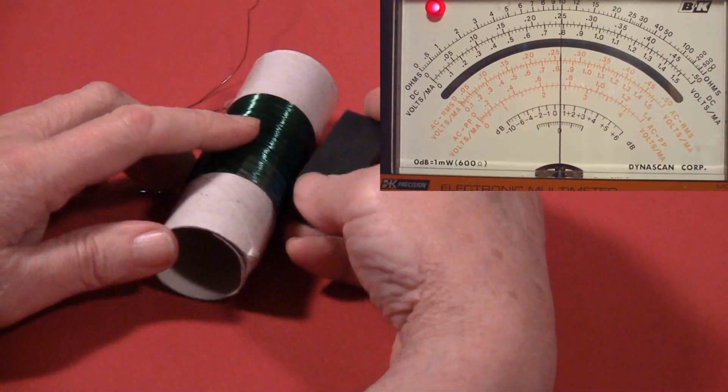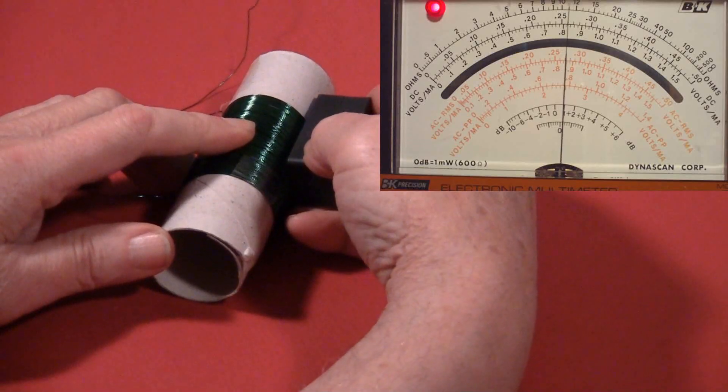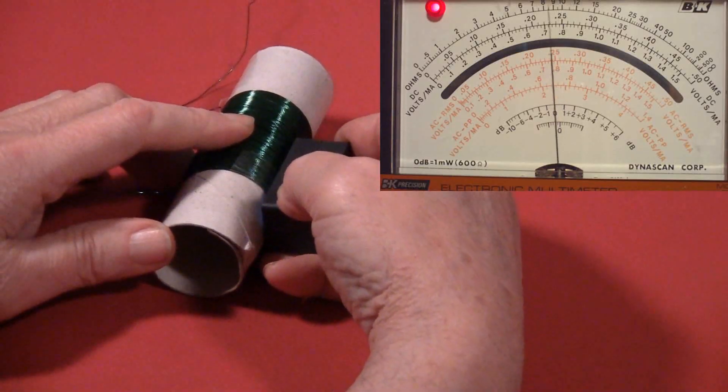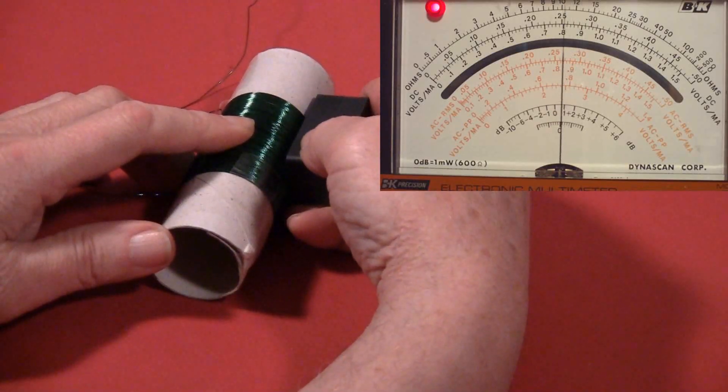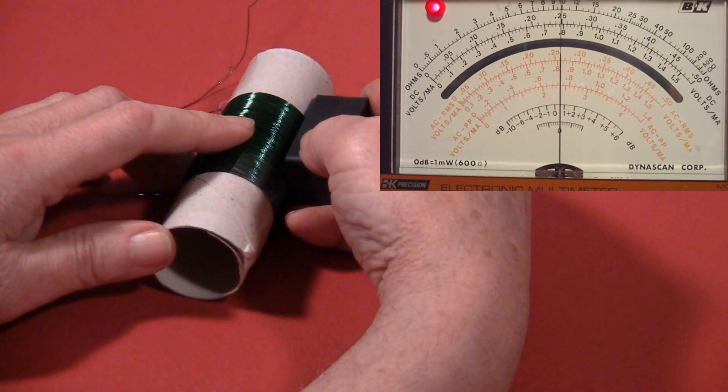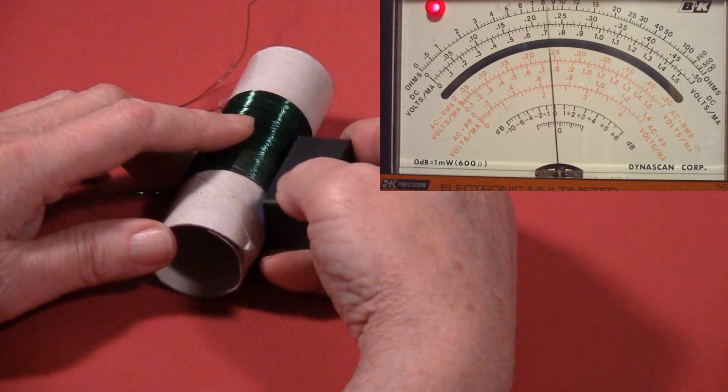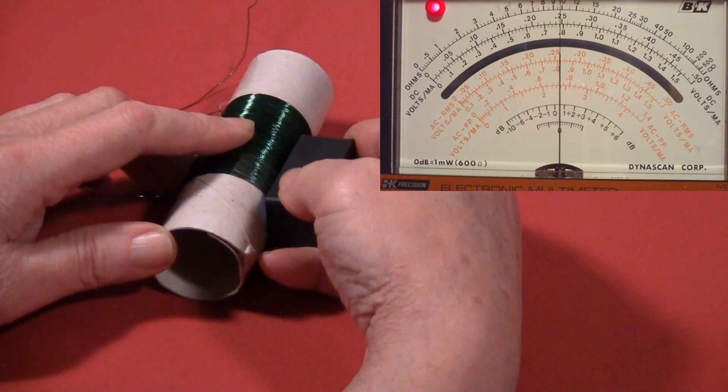If we take this magnet and move it across the coil, we'll see that when I move it up, it moves to the right, and when I pull it back, it moves to the left.